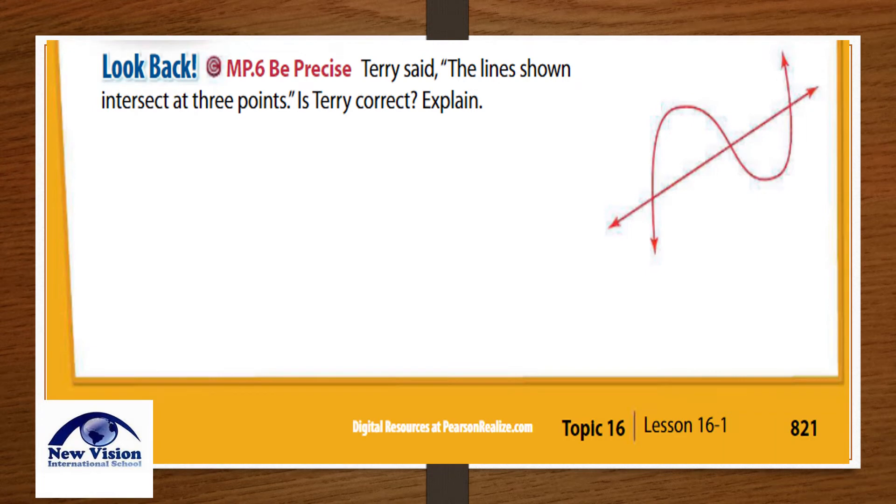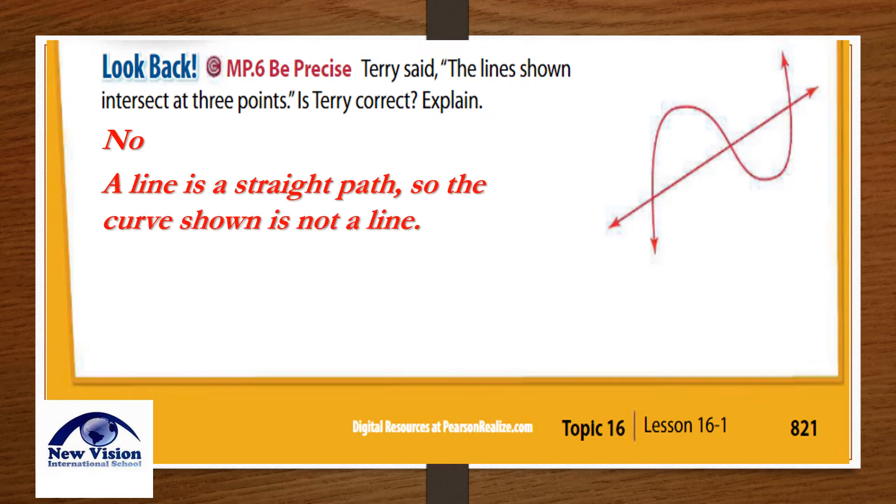Look back! Terry said the lines shown intersect at three points. Is Terry correct? Explain. Answer: No. A line is a straight path. So the curve shown is not a line.